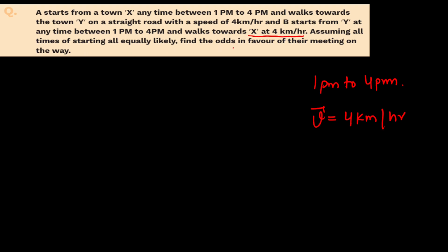We have to find the odds in favour of them meeting on the way. Before calculating the odds, we need to calculate the probability that they meet in between. Once we get the probability, we can calculate the odds in favour.